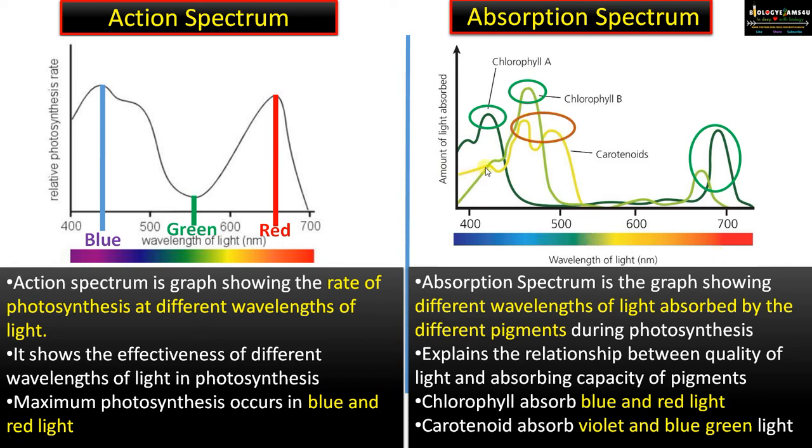For carotenoids, the yellow line shows a peak in the violet region and also in the blue-green region, so it absorbs violet and blue-green light. The absorption spectrum has amount of light absorbed on the x-axis and wavelength of light on the y-axis.